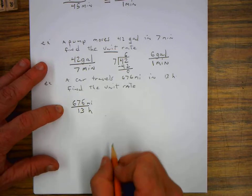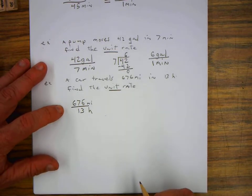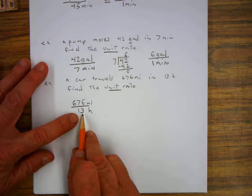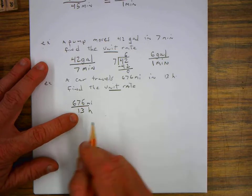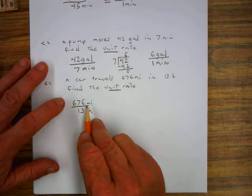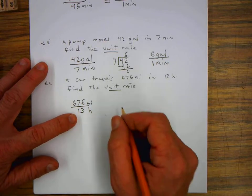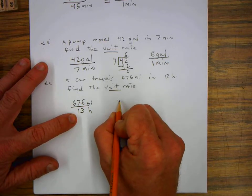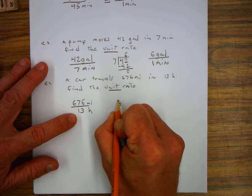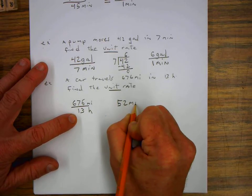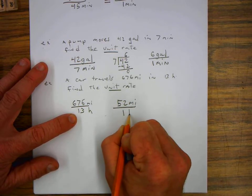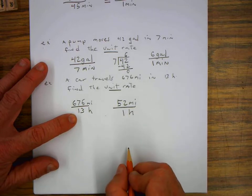Now we want to find the unit rate. In other words, we want to make the denominator 1. So when I do my division, 676 divided by 13, it turns out to be 52 miles in one hour. And that's it.